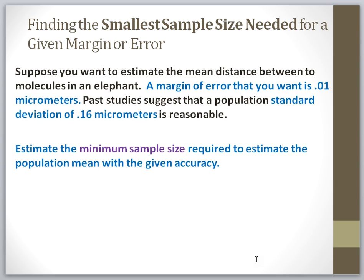For example, your sample mean might be within 5, 6, 0.05, 0.001, or whatever error you want from the actual population mean. Using heights as an example, let's say the mean population for female height is 64 inches. Now let's say you want to grab a sample and you'd like your sample to be within 1 inch plus or minus of that population mean. That means your margin of error is plus or minus 1.